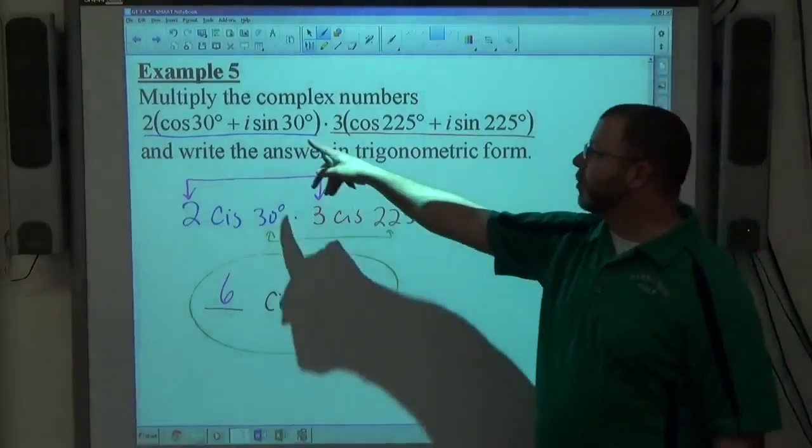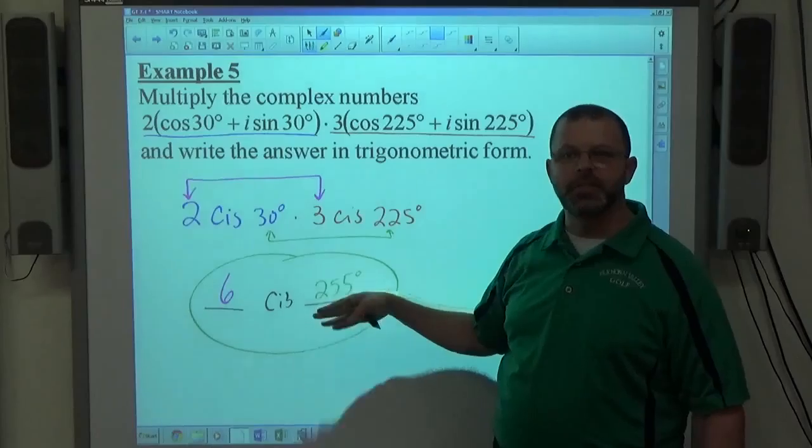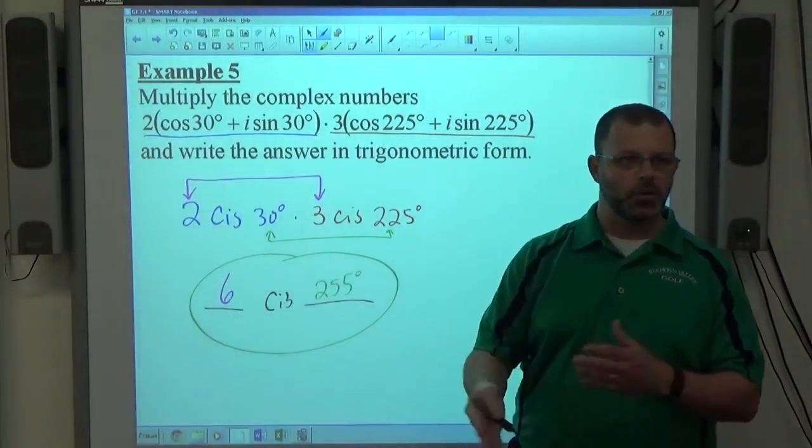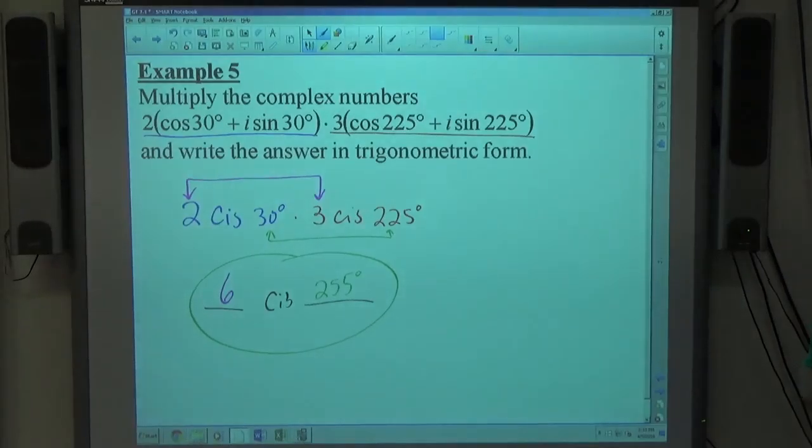If this angle had been 300 plus 225, all of a sudden that makes 525. Now you've got to subtract 360 to get it between zero and 360. You always want the angle between zero and 360 when you're in degrees.